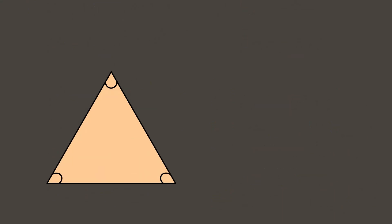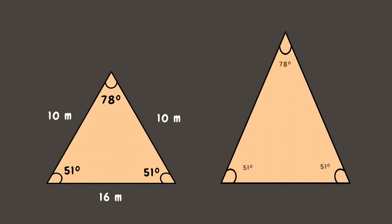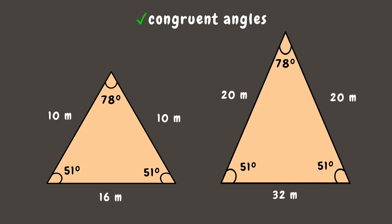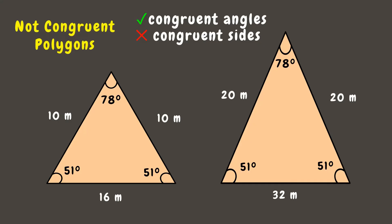Let's find out if this next pair of triangles is congruent or not. First, looking at their angles, we can see they have the same measurement, so they have congruent angles. However, looking at their corresponding sides, the sides don't have the same length or measure, which means they are not congruent. Even though these triangles have congruent angles, they are not congruent polygons since their corresponding sides are not congruent.